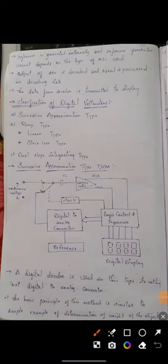In the classification of digital altimeters and digital voltmeters, we are now discussing the successive approximation type. The basic principle of successive approximation type involves measuring an object's weight using some kind of machine or instrument.